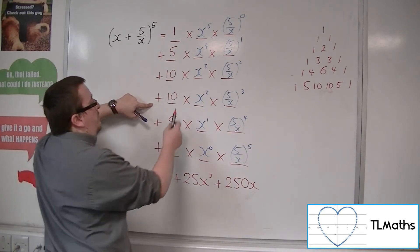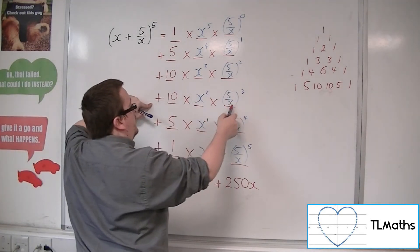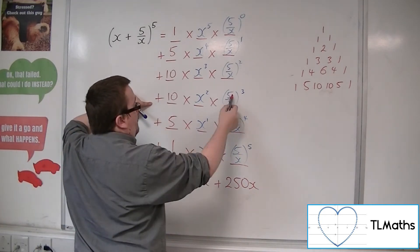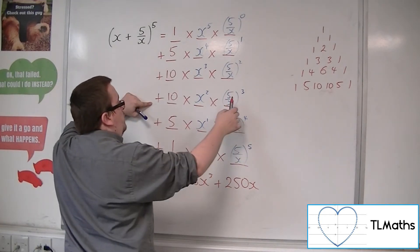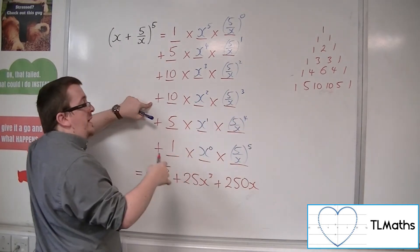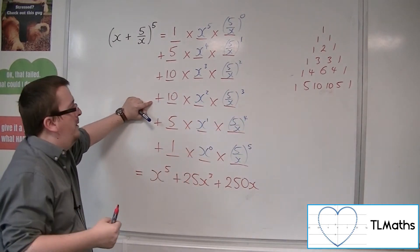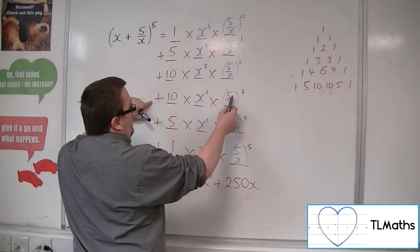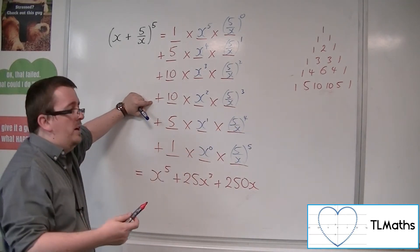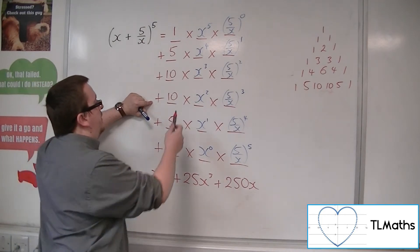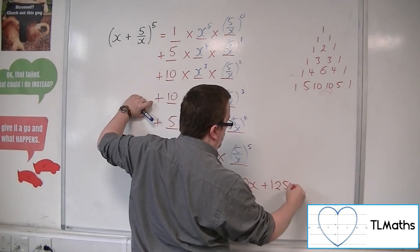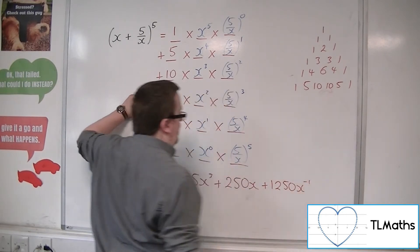For this term, we've got 10 times x squared times (5/x) all cubed. That gives x cubed in the denominator, so x squared divided by x cubed is x to the minus 1. Now 5 cubed: 5 fives are 25, times 5 is 125. So 125 times 10 is 1250. We get 1250x to the minus 1.